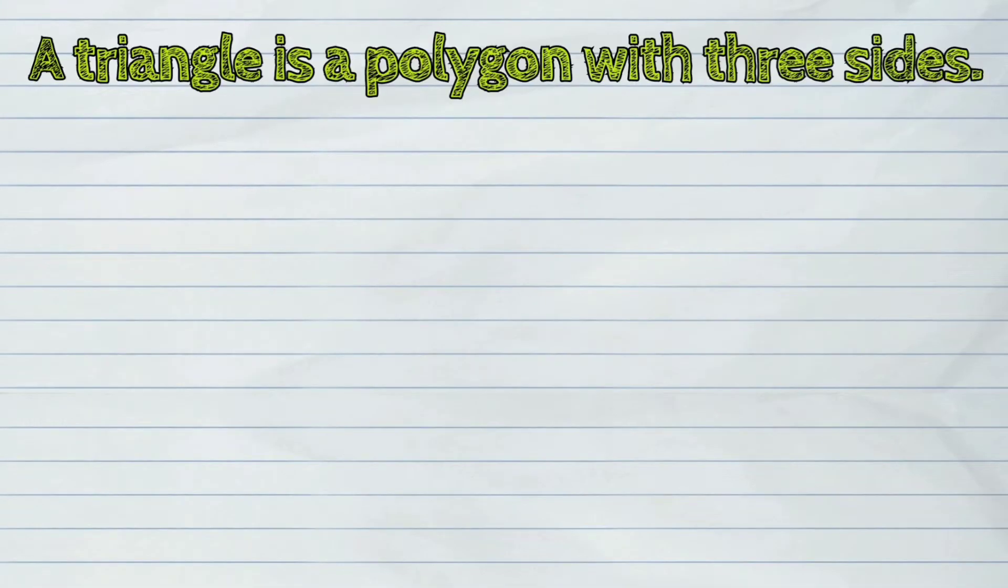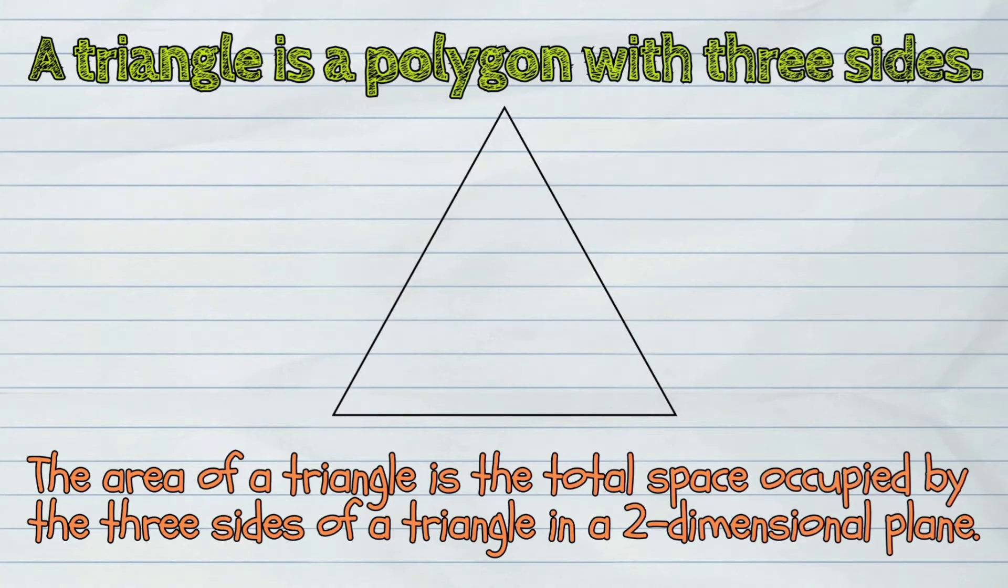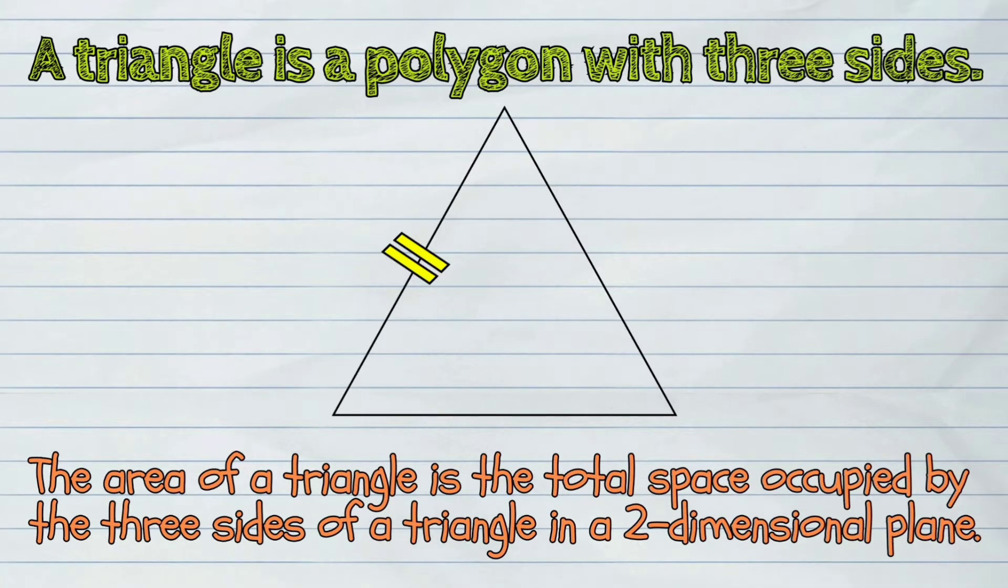A triangle is a polygon with three sides. The area of a triangle is the total space occupied by the three sides of a triangle in a two-dimensional plane.